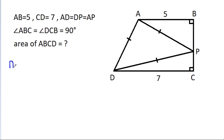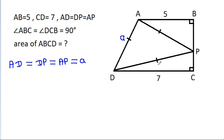We have AD equal to DP equal to AP. Suppose each is equal to a. Then AD is a, DP is a, and AP is a.